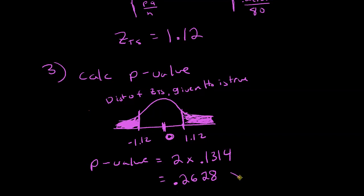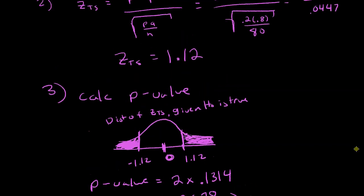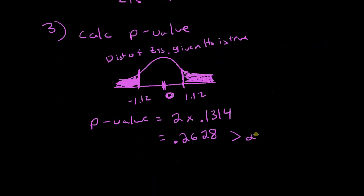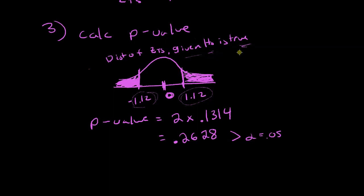The P-value of 0.2628 is greater than alpha, which is 0.05, so we are going to fail to reject the null hypothesis. A test statistic of 1.12 seems reasonable under the assumption that the null hypothesis is true, so we fail to reject it — it seems reasonable that the null hypothesis may be true.